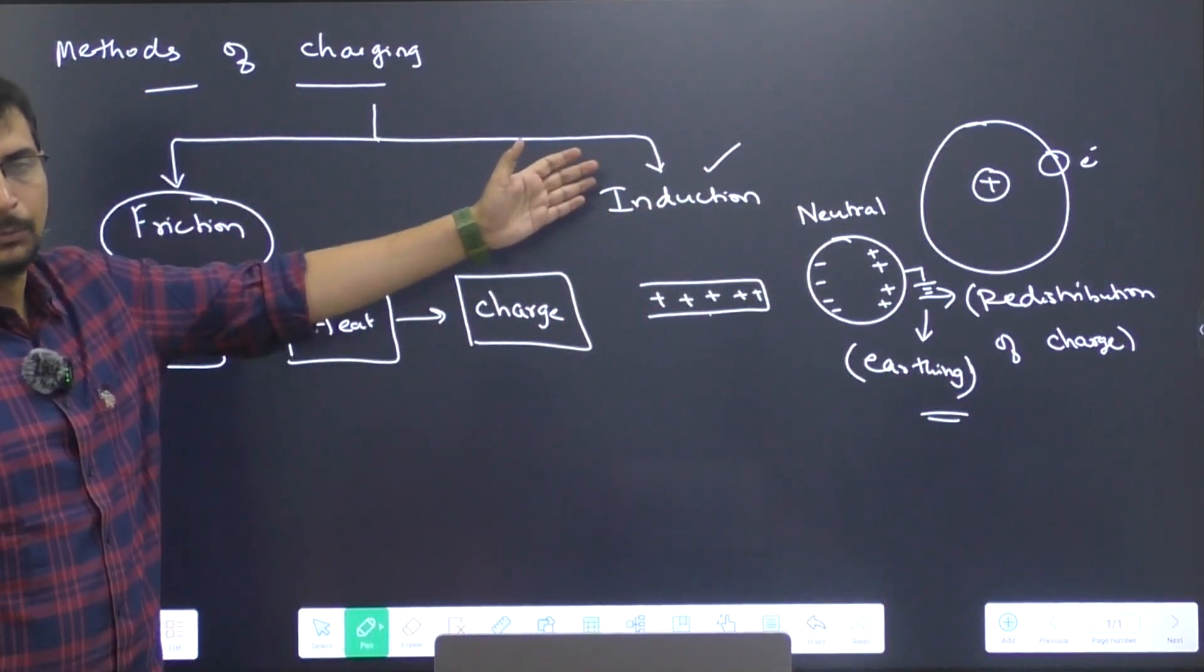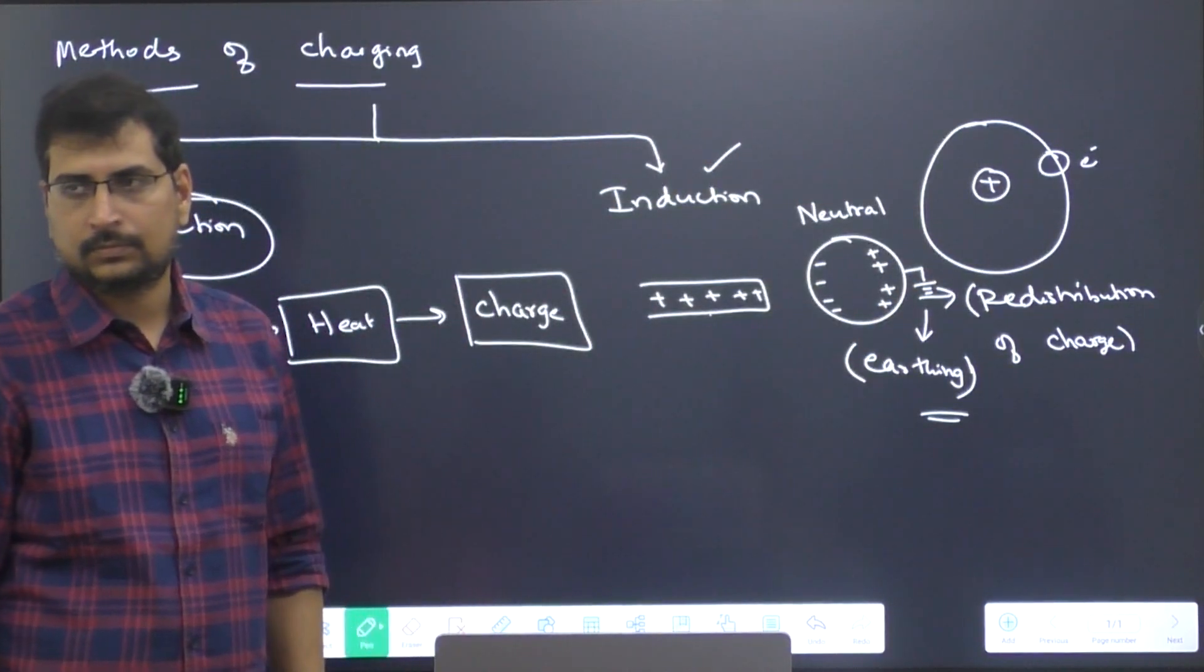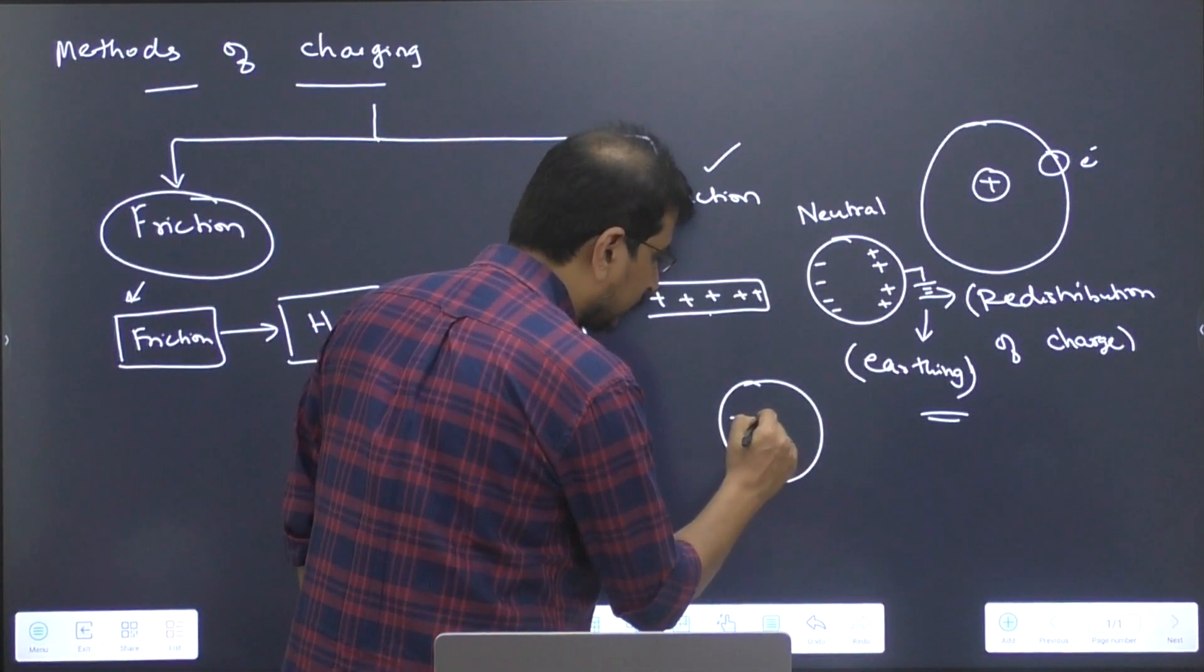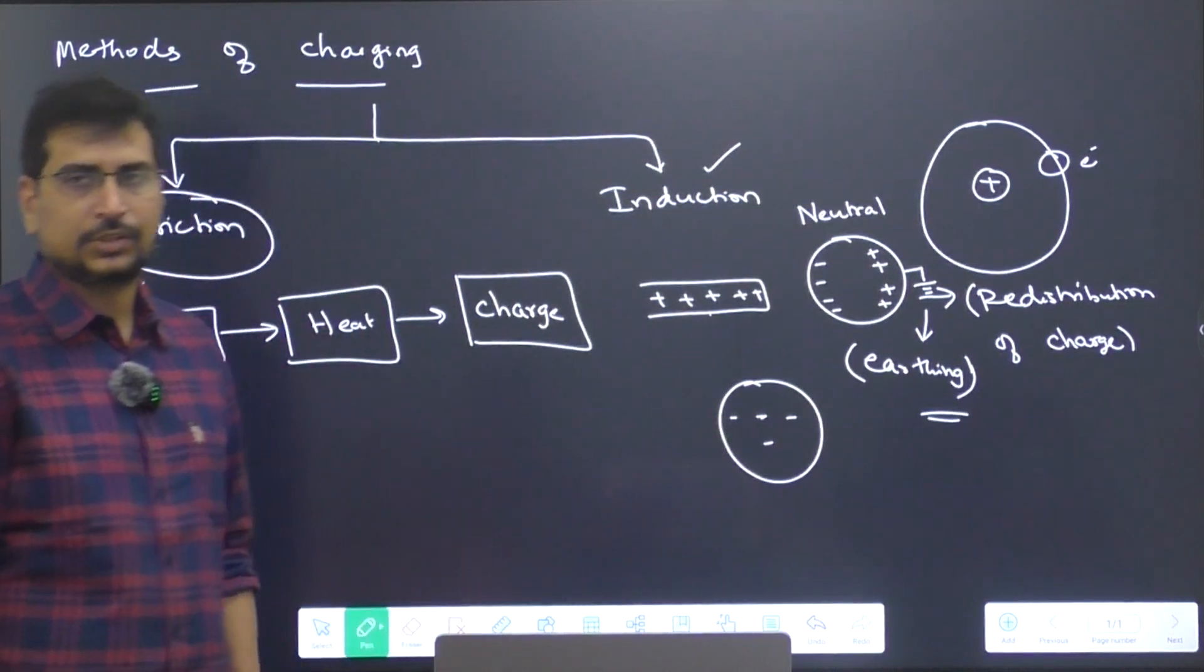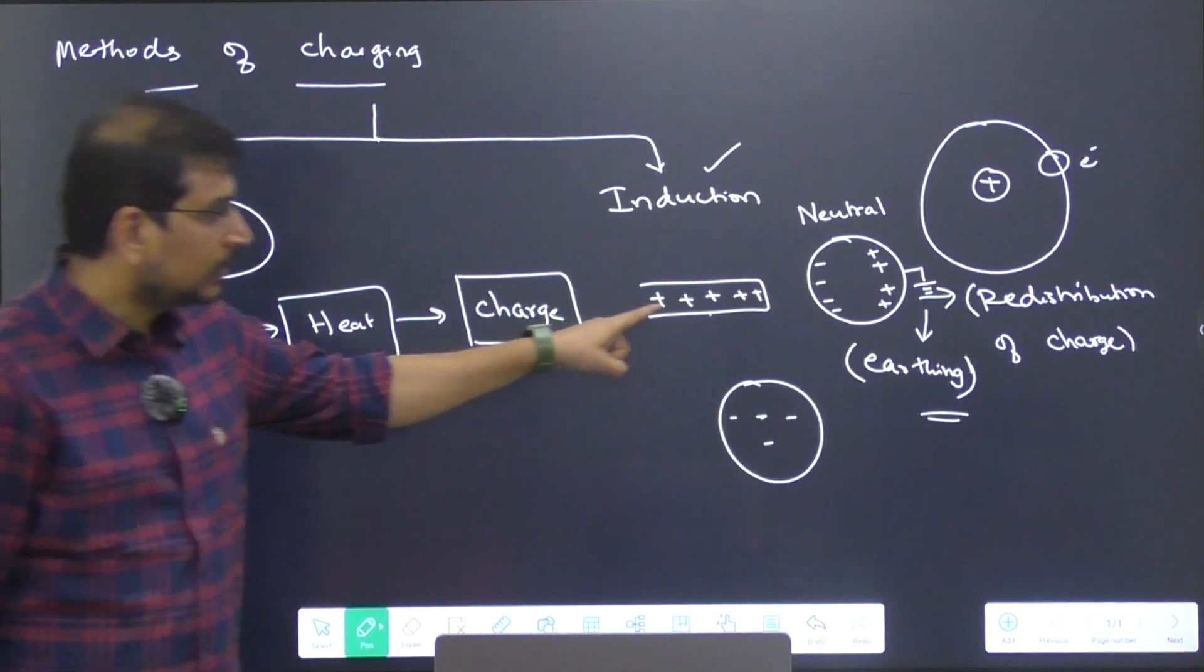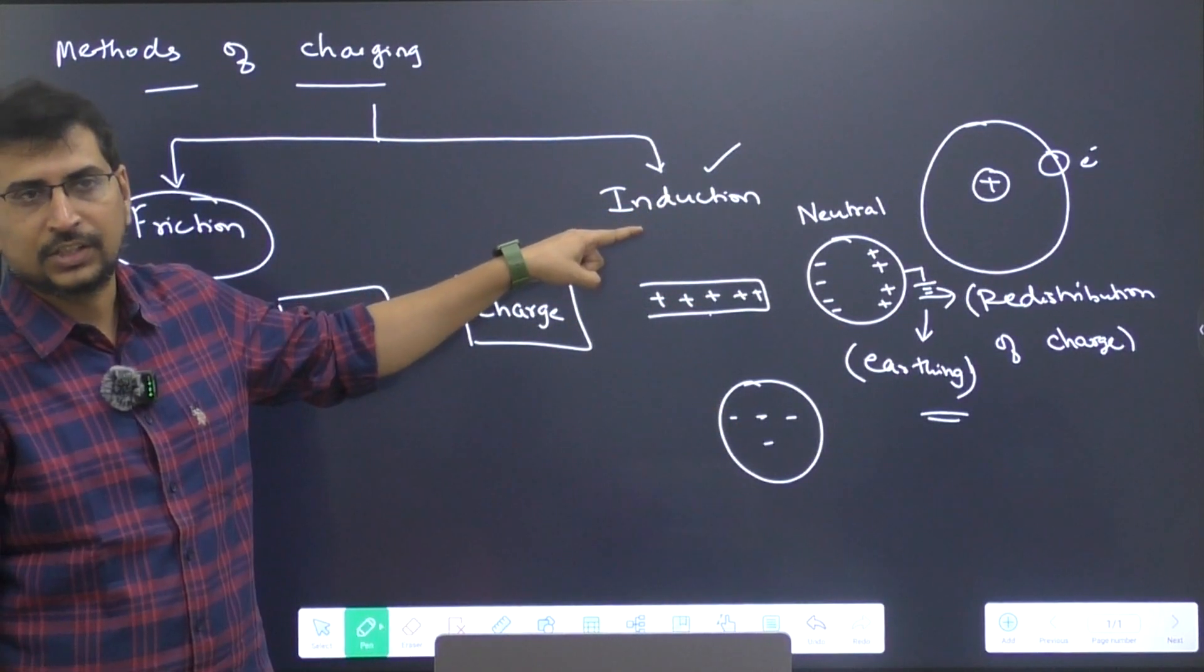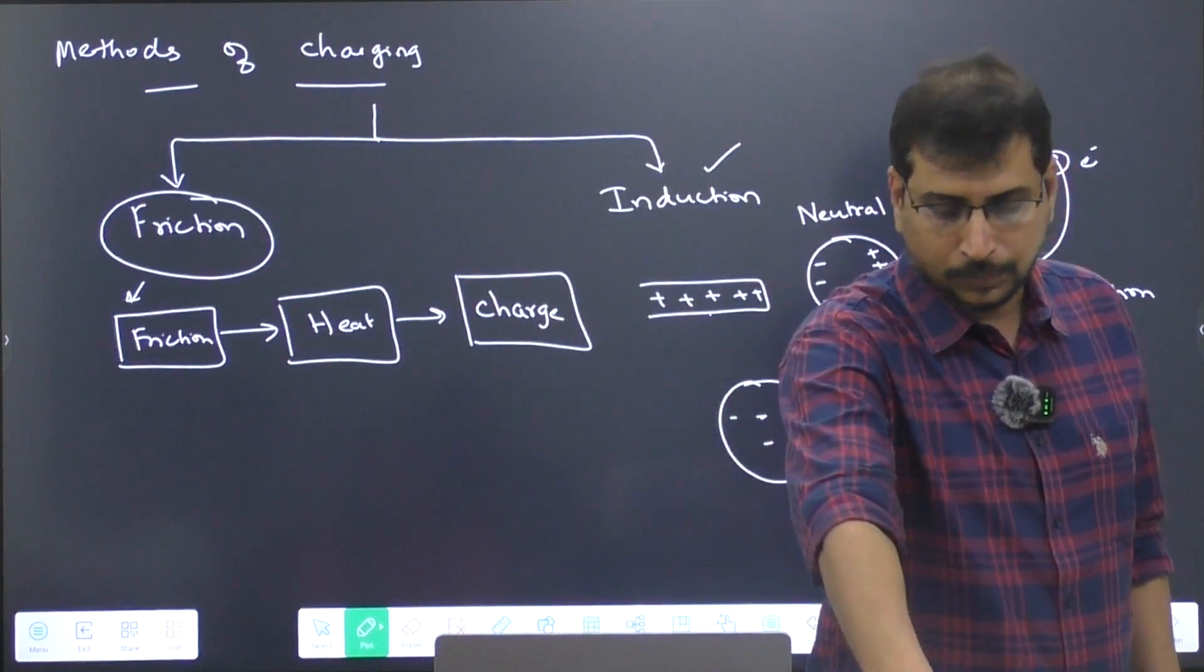When you do this, what will happen is the excess amount of charge that is present on this side will start going to the ground. When this happens, what are you left out with? You will be left out with the negative charge. Now you can say that this material is charged. But how did you approach this and bring the output without any physical contact? By attaining charge on a material through this process, this is what is called as charging through induction.